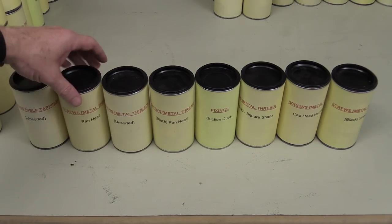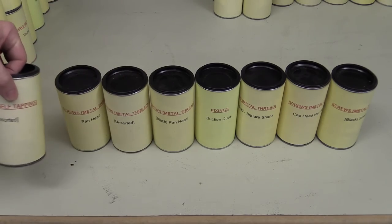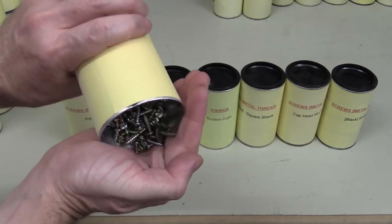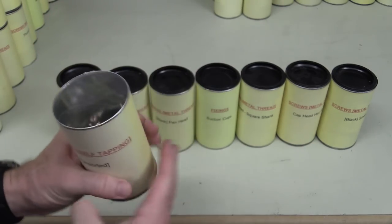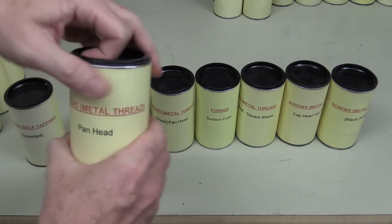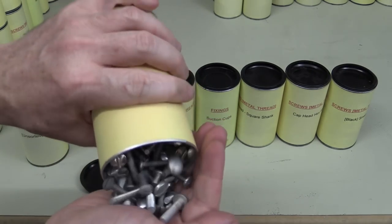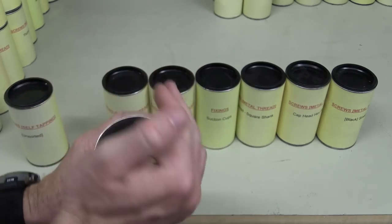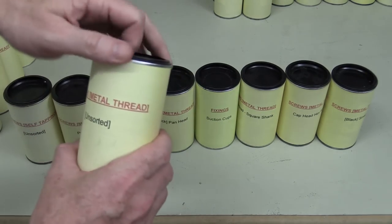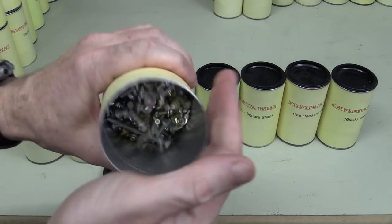Let's look at some screws and fixings and things. So self-tapping unsorted, oh my goodness. Wow, assorted self-tappers. Geez, you couldn't find what you wanted in there you weren't trying. Metal pan head metal threads, just you know all miscellaneous ones, all obviously salvaged.